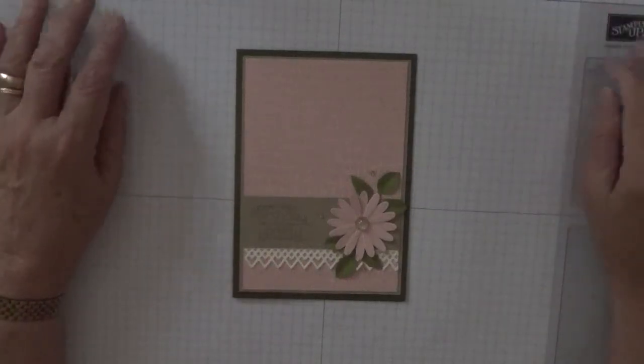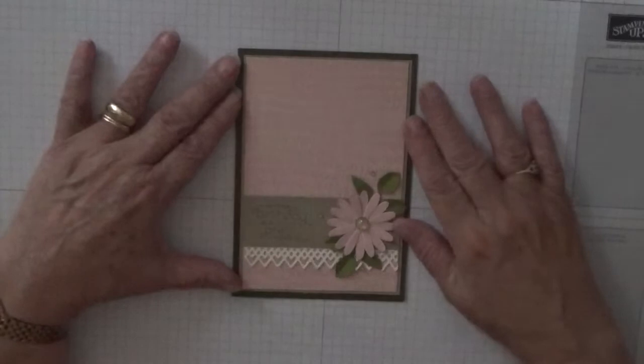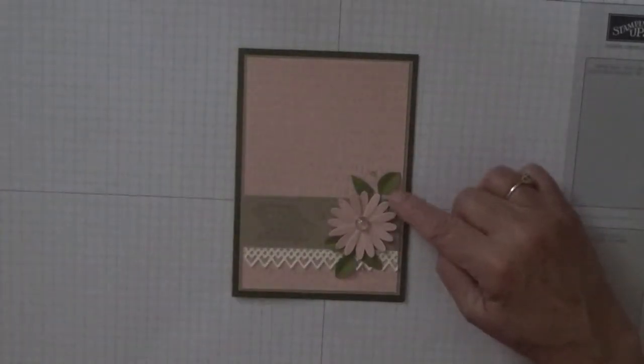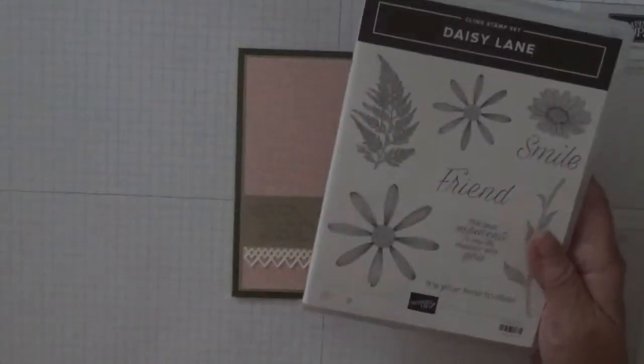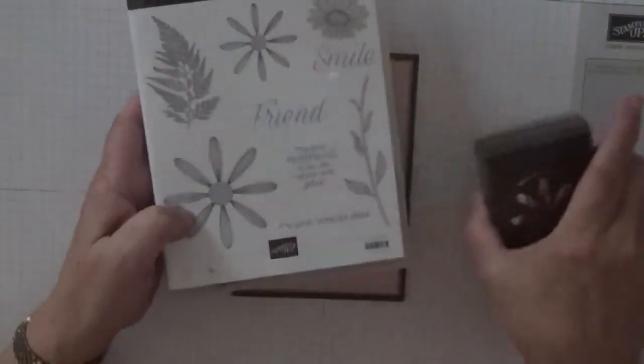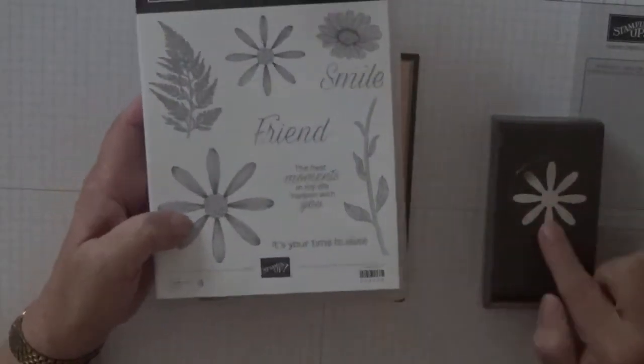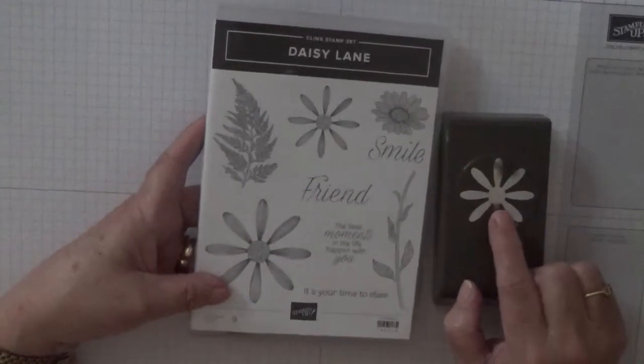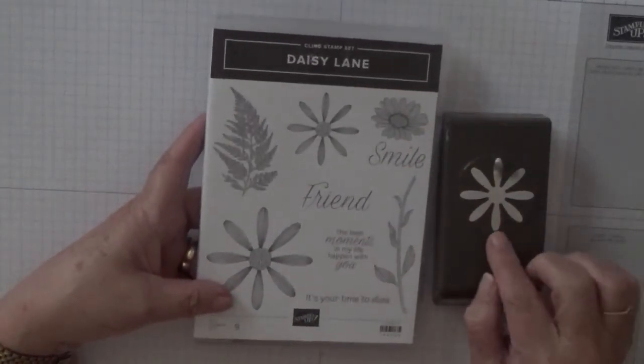Hi, Georgie Burns here. Today I'd like to show you how I made this card. This card was made using the new Daisy Lane stamp set and the mini Daisy punch which you can get in the new catalog.